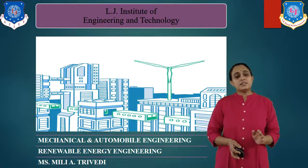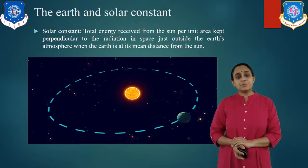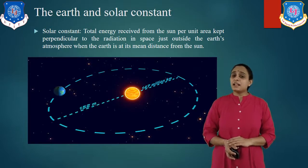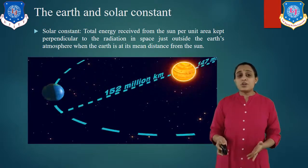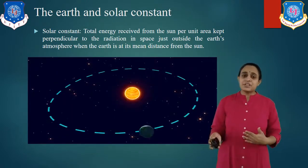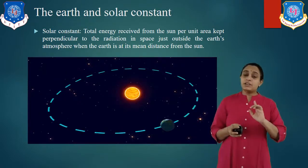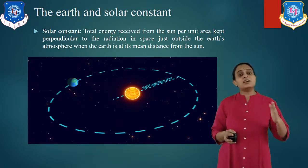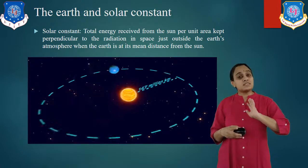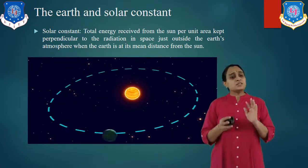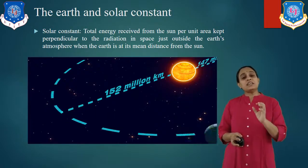The Earth and solar constant, as we have already discussed in our previous video, let us revise it — it will help us to understand the other values of angles and calculations. The solar constant is defined as the total radiation energy received from the sun per unit time per area on the theoretical surface which is perpendicular to the sun's rays at the Earth's mean distance from the sun. It is most accurately measured from satellites where atmospheric effects are absent.